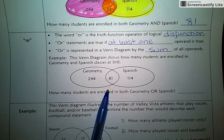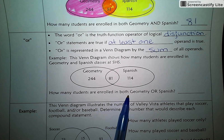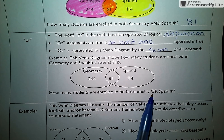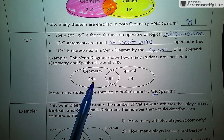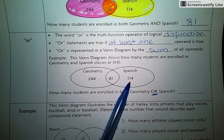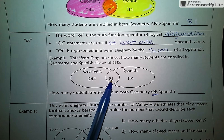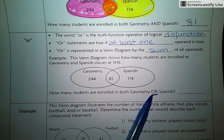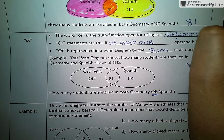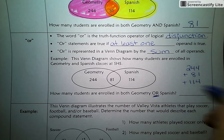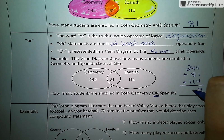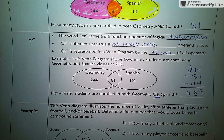Same exact Venn Diagram we just looked at, but this time we're asked how many students are enrolled in Geometry or Spanish. There's the big difference. These students are in Geometry, these students are in Spanish, and there are 81 students in both. Because we're using the word OR, we want to take all three categories of students and add them together. That's a total of 439 students who are taking either Geometry or Spanish.